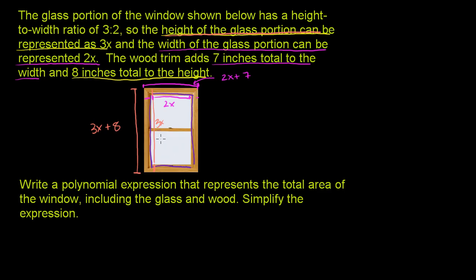The total area is just going to be the height times the width. So the area equals the height, which is 3x plus 8, times the width, which is 2x plus 7. We've written it as a product of two binomials, and if we want to simplify it, we can just multiply it out.